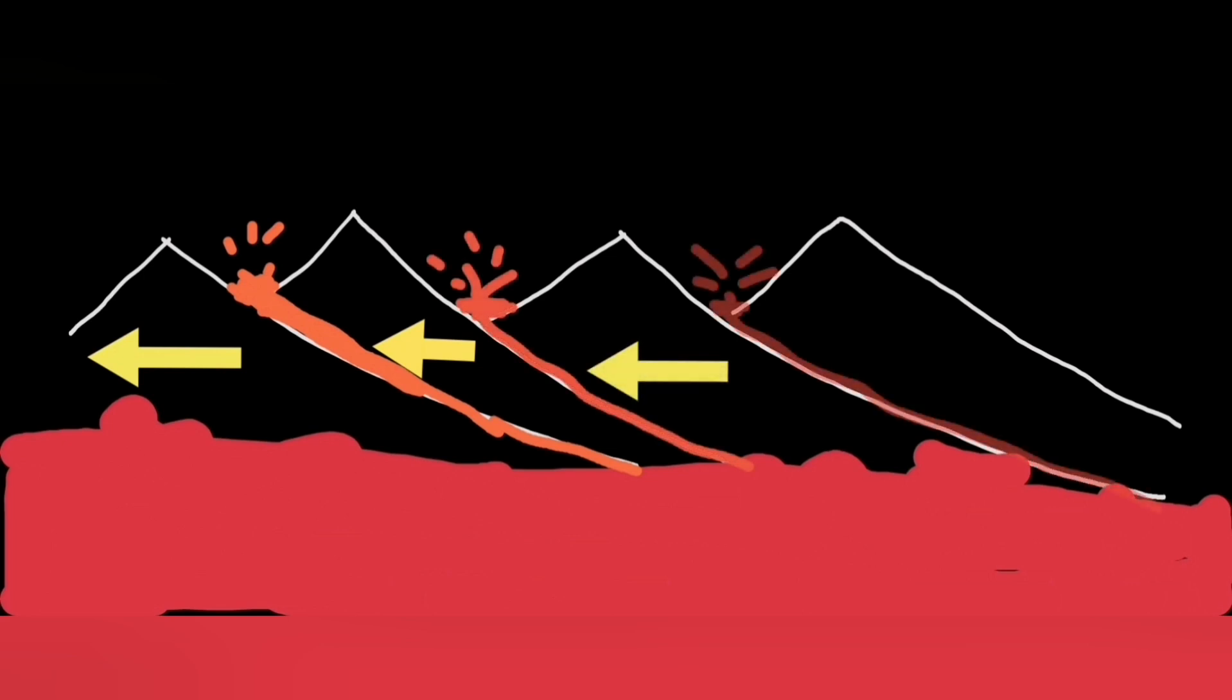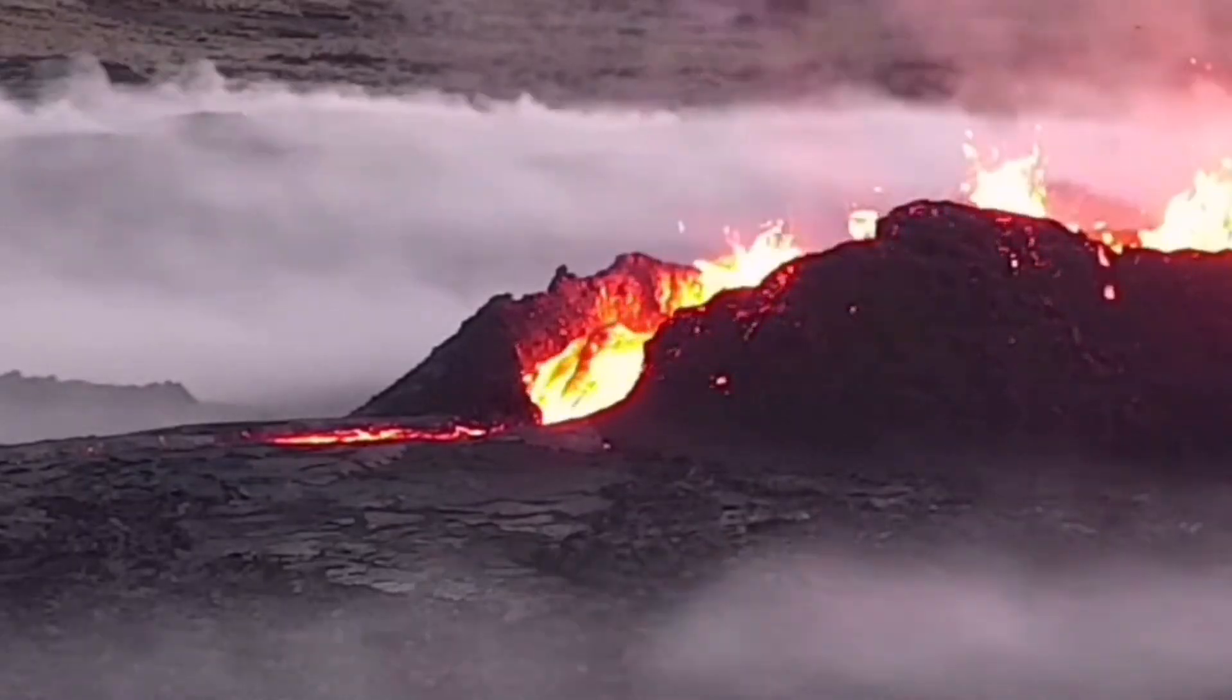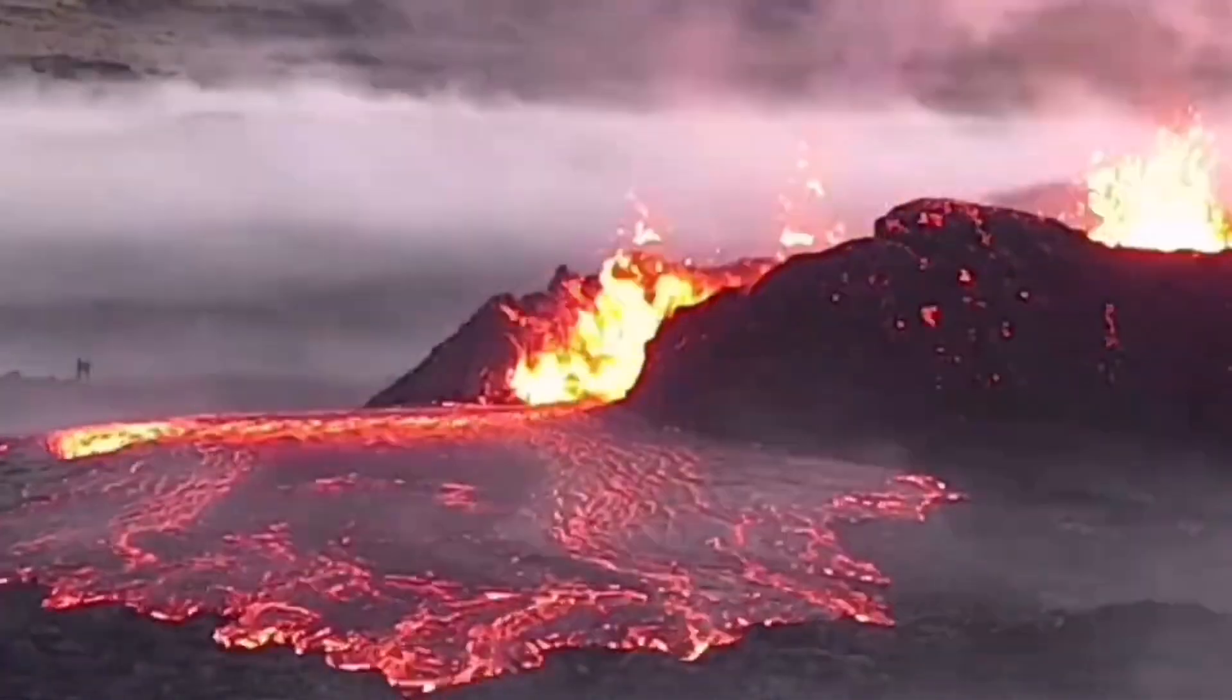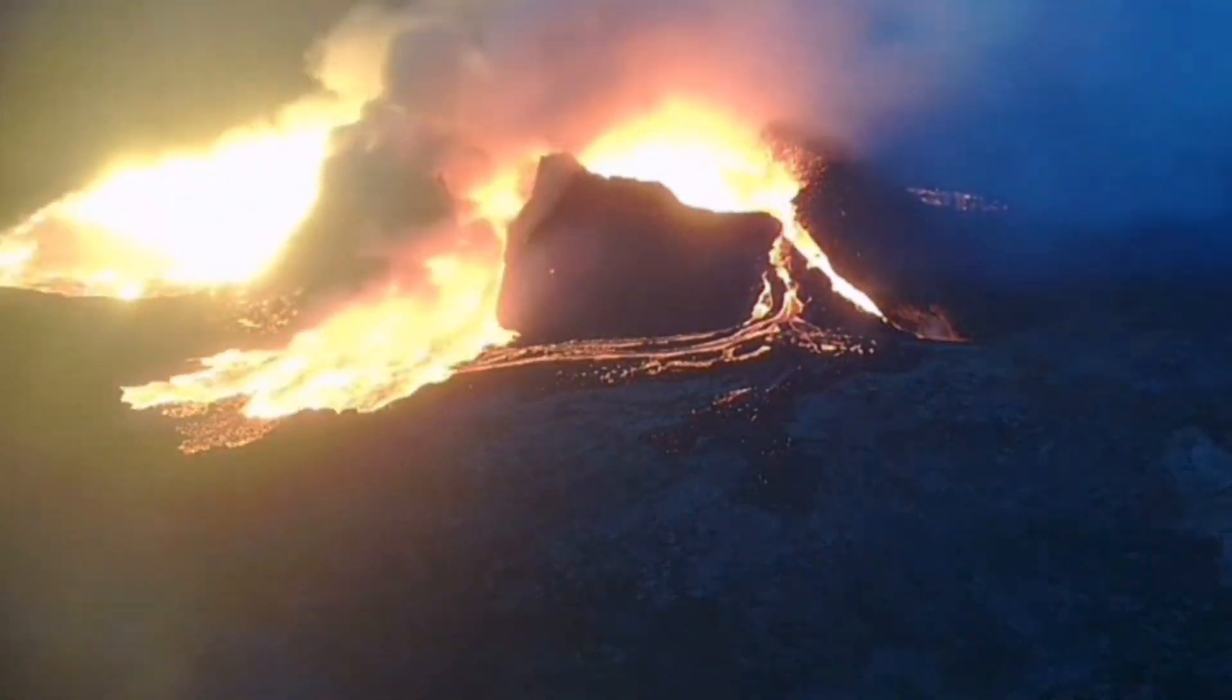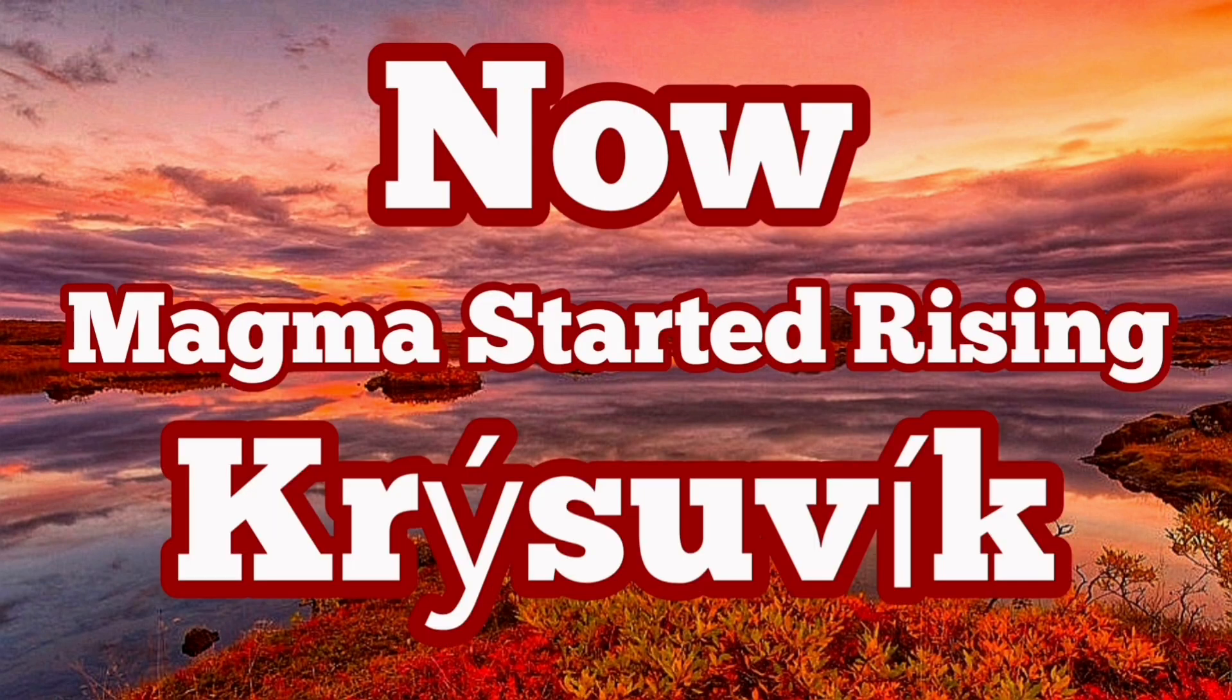This is a scary situation because the Svartsengi Blue Lagoon Grindavík volcanic system is now active. And the magma movement in that direction can actually increase the chances of the risk to the buildings and the structures in the vicinity of those areas, including Reykjavík, the capital of Iceland.